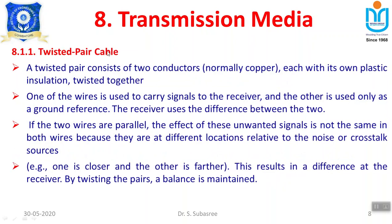A twisted pair cable consists of two conductors — from the name itself we can understand 'pair' represents two. It has two conductors, normally copper, covered with plastic insulation. One of the wires is used to carry a signal and the other wire serves as a ground reference. Two wires are there: one acts as the signal carrier to the receiver and the other represents the ground reference.